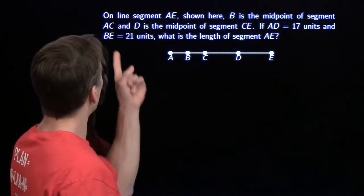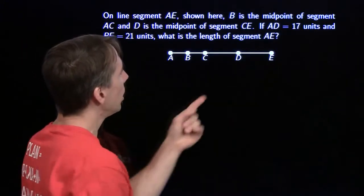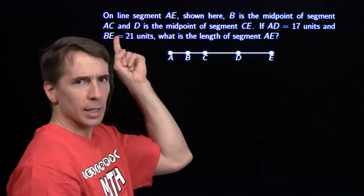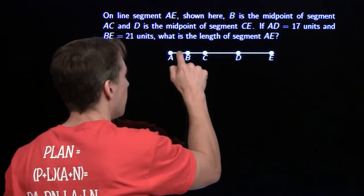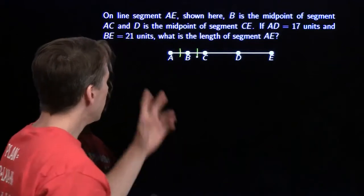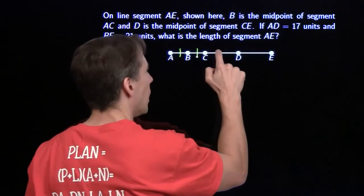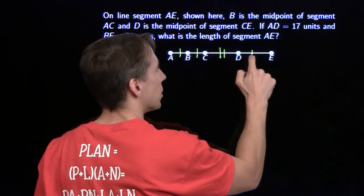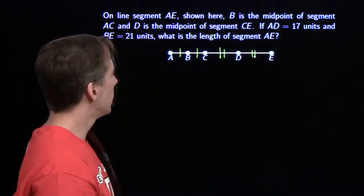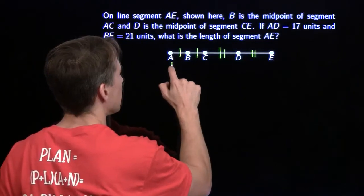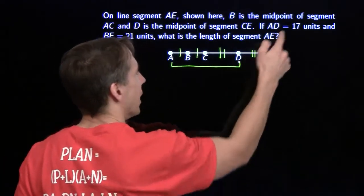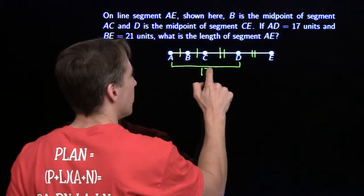I've got words and a picture here. I've got line segment AE shown. B is the midpoint of segment AC, so I'm going to mark that. D is the midpoint of CE, I want to remember that as well. I've got AD is 17, so that means that this length here is 17.